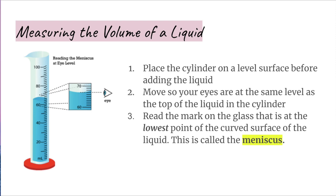Volume is the space occupied by an object. At home you might measure the volume of a liquid with a measuring cup; in science, volume is measured with a graduated cylinder. The graduated cylinder shown has a scale in milliliters with a maximum volume of 100 milliliters. Note that there are varying sizes of graduated cylinders with different increments.